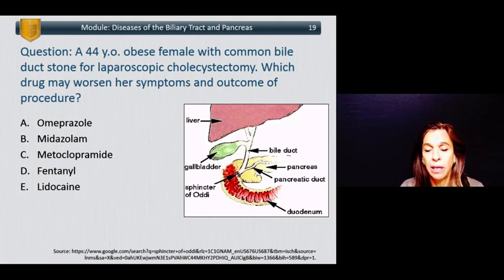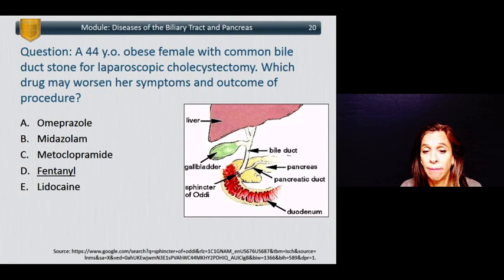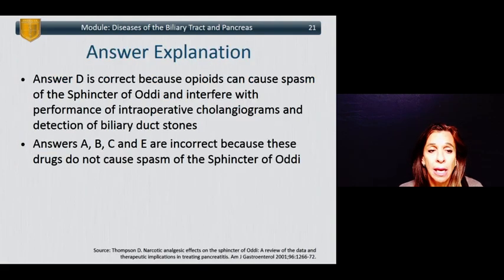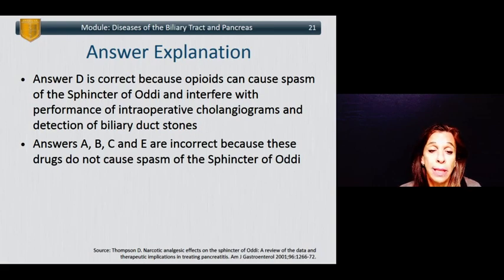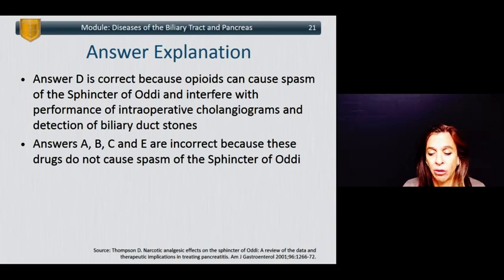The answer is fentanyl, because of the effect it has on the sphincter of Oddi. Answer D is correct because opioids can cause spasm of the sphincter of Oddi and interfere with performance of intraoperative cholangiograms and detection of biliary duct stones. Answers A, B, C, and E are incorrect because these drugs do not cause spasm of the sphincter of Oddi.